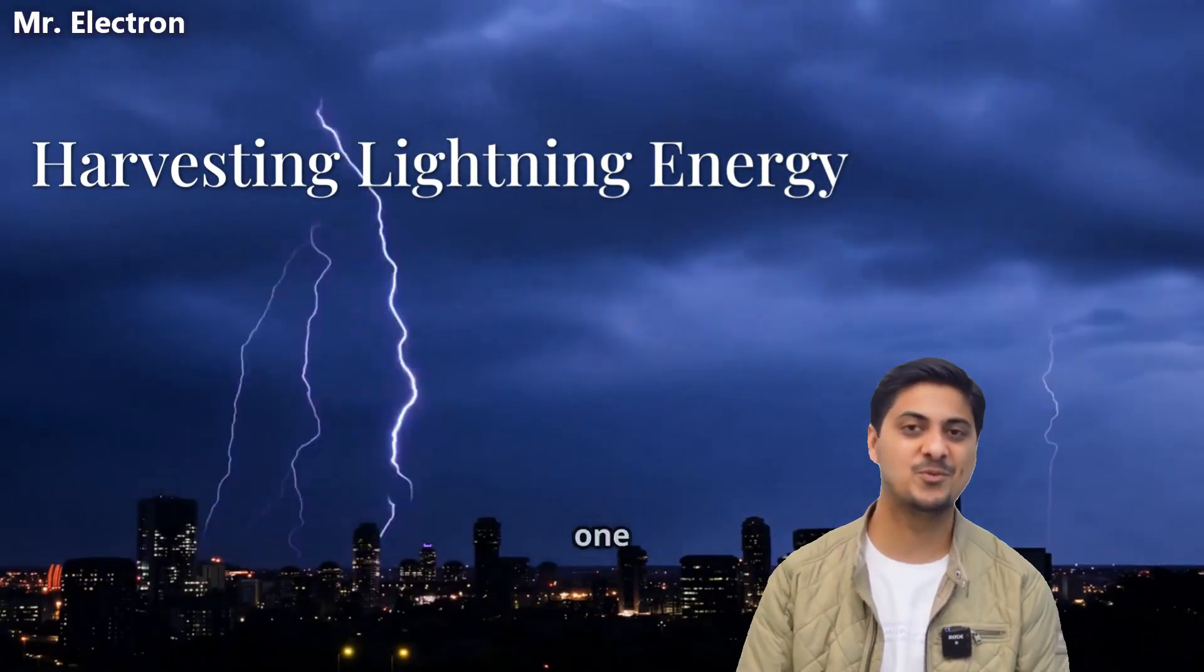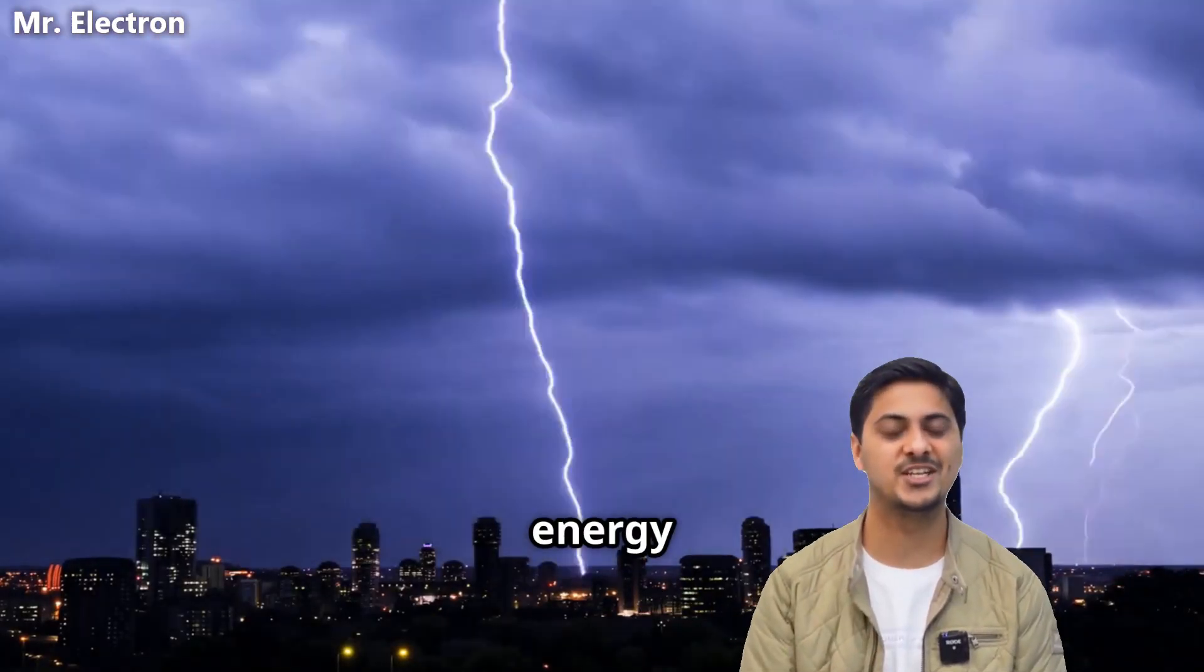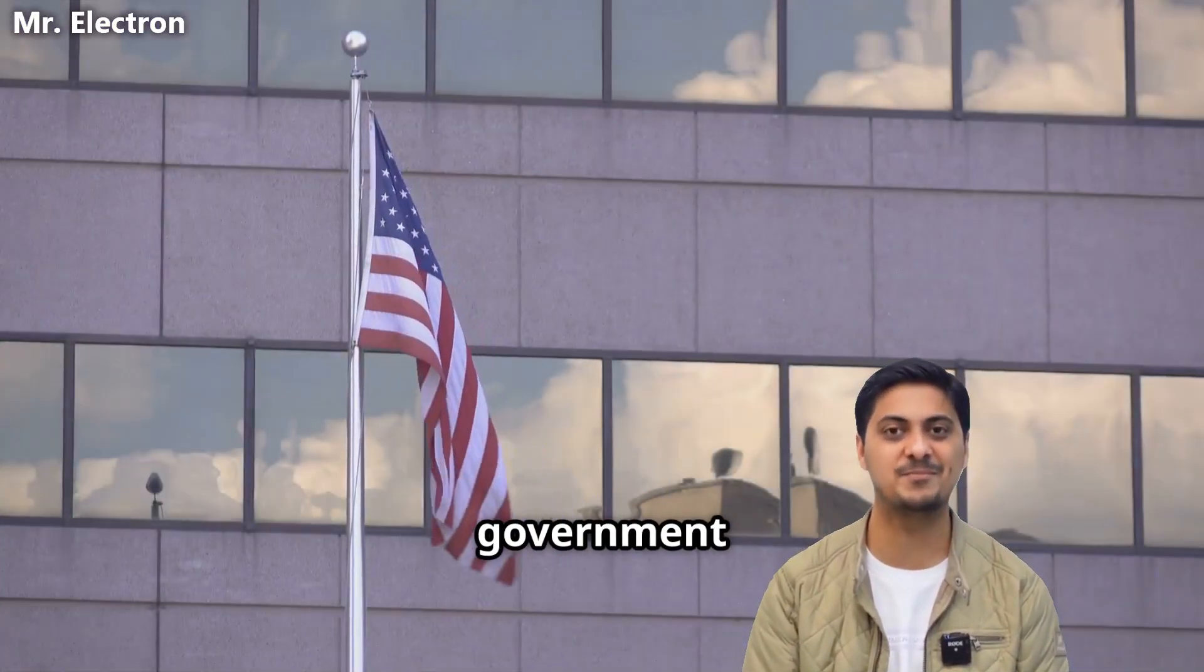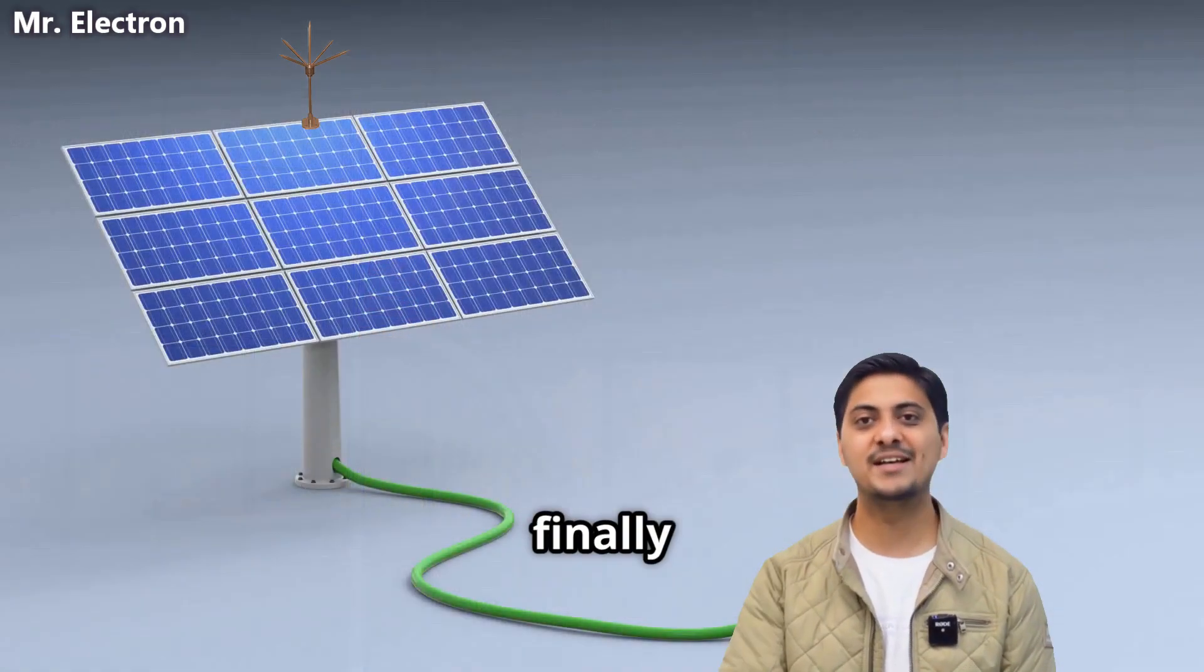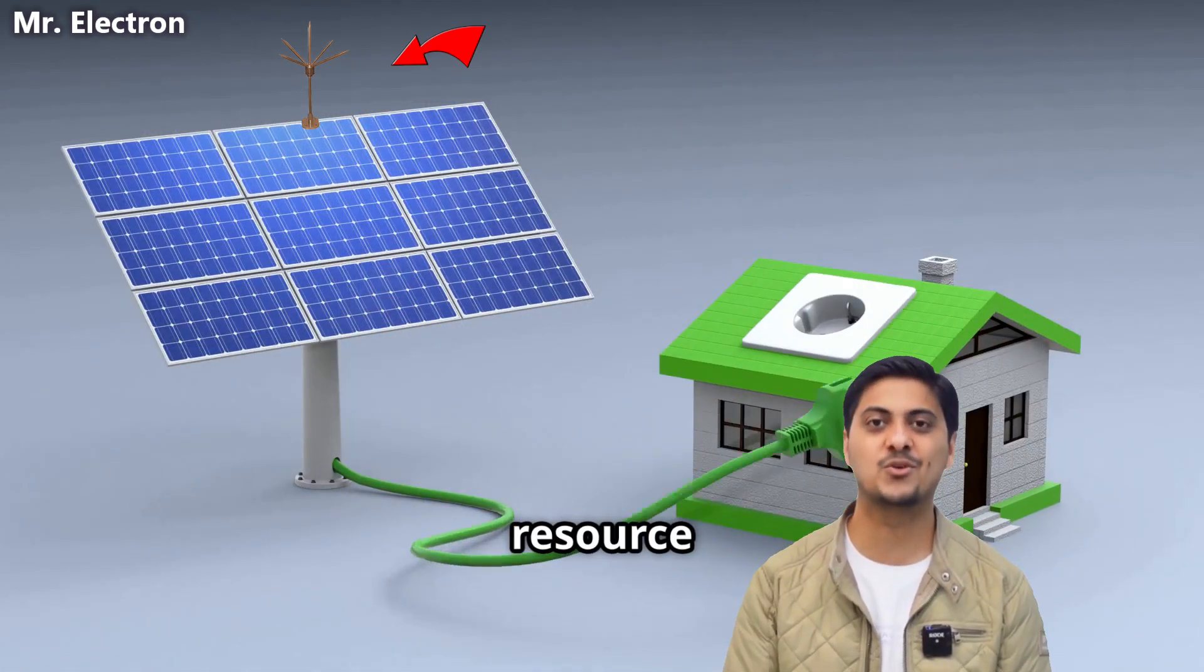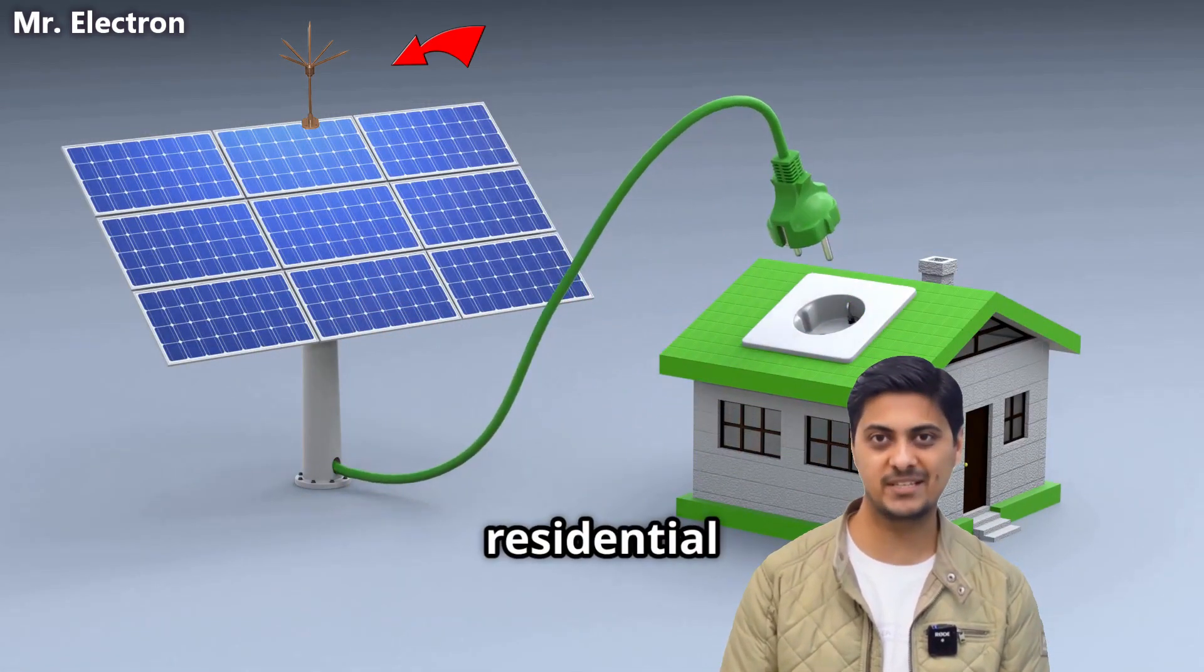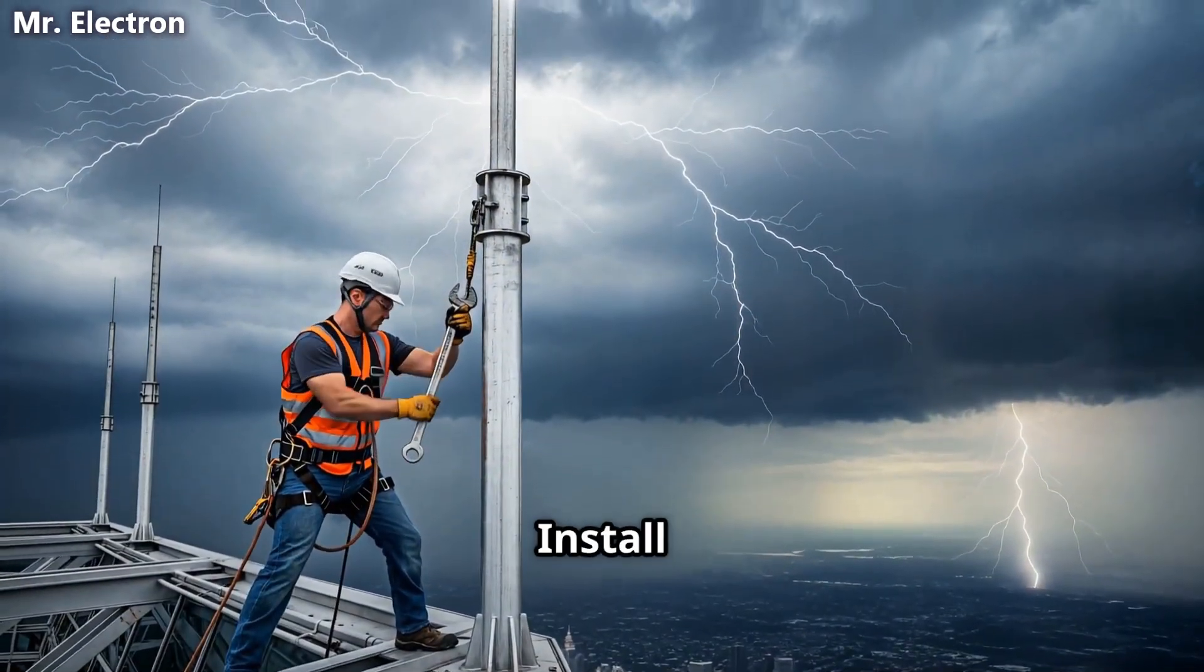Lightning strikes deliver up to 1 billion joules of energy in microseconds, and with government backing and mass production we can finally turn this free natural resource into a viable power source for residential buildings. The concept is straightforward: install special lightning capture kits on tall buildings.